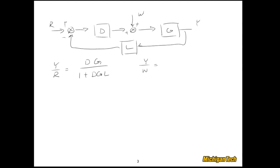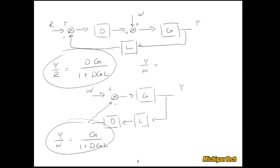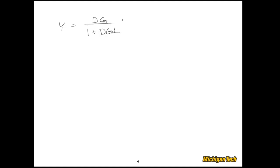To get the other transfer function Y over W, we set R equal to 0 and rearrange the block diagram. We find that Y over W is equal to G over 1 plus DGL. Combining these two results, we can write Y equals DG over (1 plus DGL) times R, plus G over (1 plus DGL) times W.